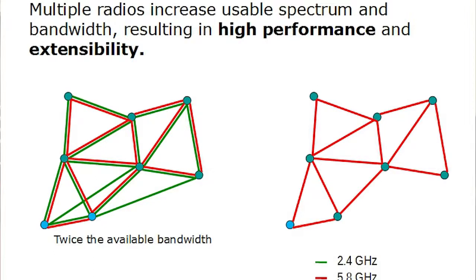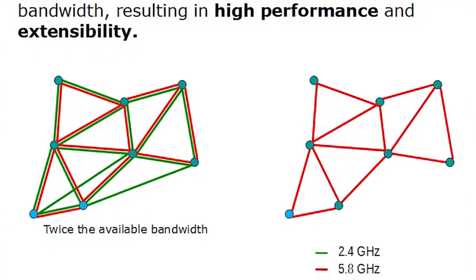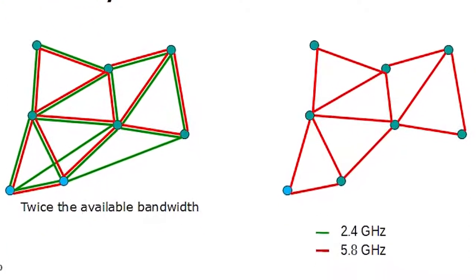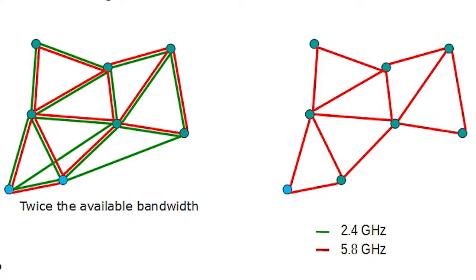Having multiple radios also increases the usable spectrum and just gives us more bandwidth we can use to deliver applications. The two network diagrams show the same network. The one on the left is a two radio network. The one on the right is a one radio network. The one on the left obviously has about twice the available bandwidth.